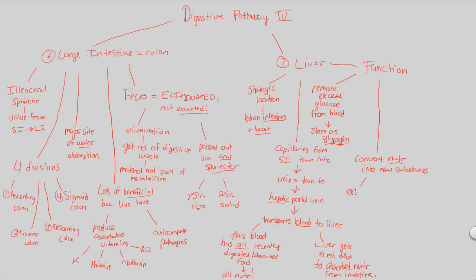The liver is going to be a major site, for example, of protein synthesis. So, you have these amino acids that are as a result of digestion and absorption into the blood that will then be synthesized into new proteins that the body needs.